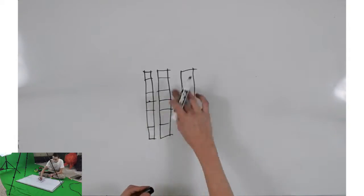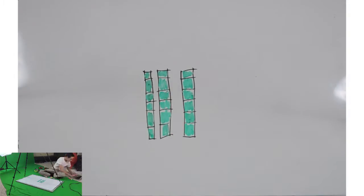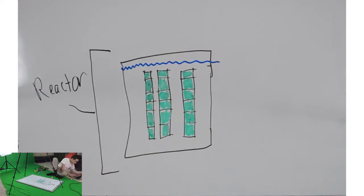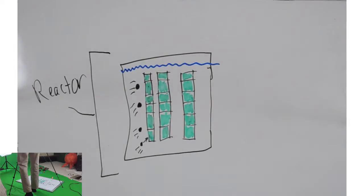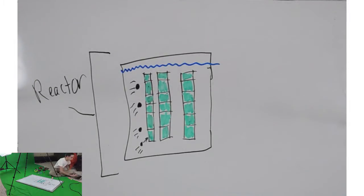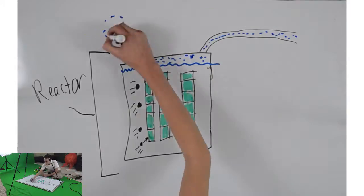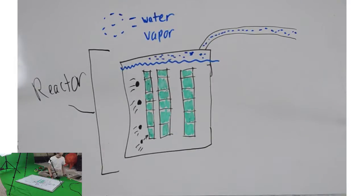First, fuel rods comprised of pellets of enriched uranium or plutonium are inserted into a box called a reactor that is filled with water. Then neutrons are shot at high velocities that come into contact with the uranium or plutonium fuel, splitting the atom. These atoms then smack into the rest of the uranium or plutonium fuel in a cycle that continues the reaction.